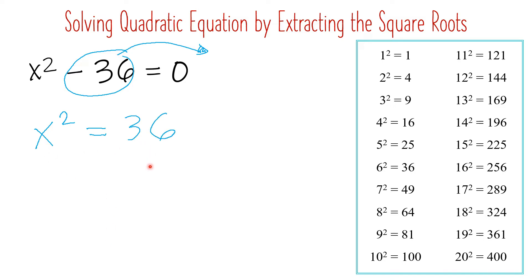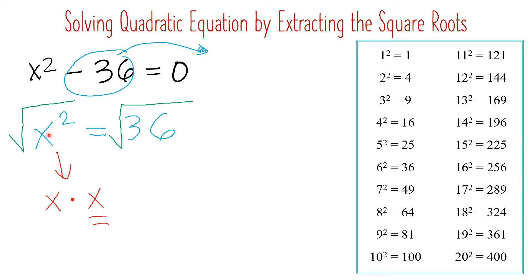Now we may start extracting the square root. To do that, use a radical sign and put it on both sides, then get the square root of each side. The square root of x squared — since x squared is obtained by multiplying x times x — the square root of x squared is just x. If you encounter a variable with an exponent of 2 under a radical, you may just cancel the radical and the square. Now we only have x on this side.